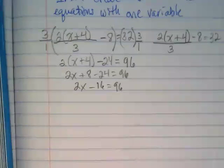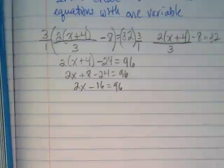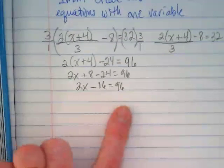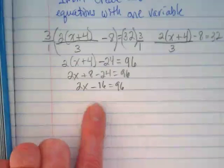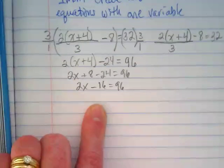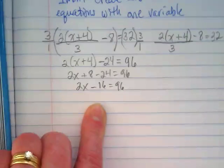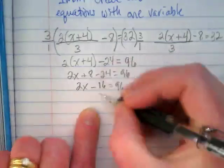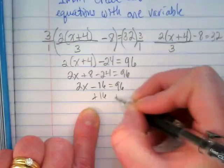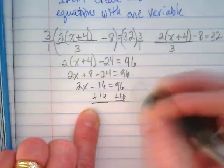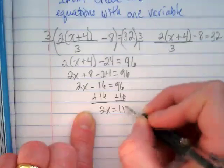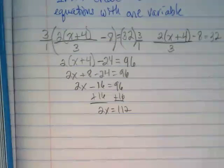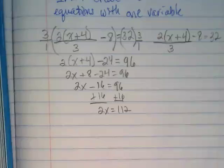Now we have to combine like terms across the equal sign. This negative 16 and this positive 96, they have to go together. This is a negative 16. When we go across the equal sign, we do inverse operations. Since it's negative, we're going to add it, right? And that gives us 2x is equal to 112. What are we going to divide by? 2. Yep.